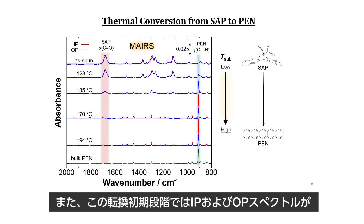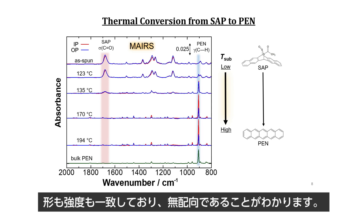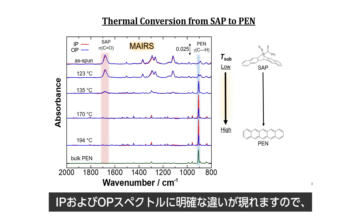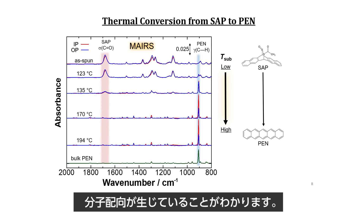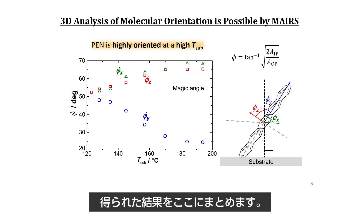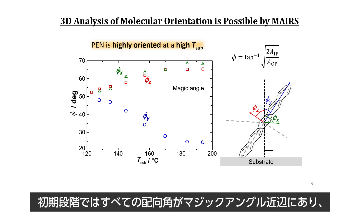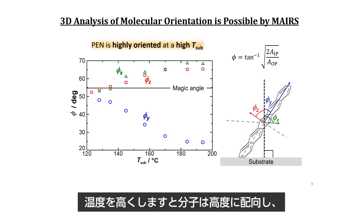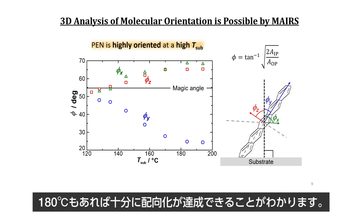Of interest is that at this early stage, the generated pentacene has a random orientation because the IP and OP spectra are the same as each other in both shape and intensity. At a higher temperature, after finishing the conversion, an apparent difference is found between the IP and OP spectra, indicating a molecular orientation of pentacene in the film. Molecular orientation analysis on MERS spectra is an easy task, and the analytical results are summarized here. At an early stage, all the angles are near the magic angle, implying that the molecules have a random orientation. When the substrate temperature is increased, the molecules adopt a highly oriented structure, and 180°C is good enough for obtaining the oriented structure.